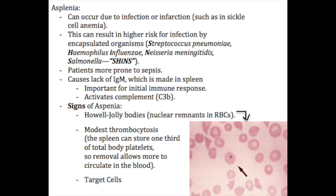IgM is what fixes complement, and complement — in particular complement factor C3B — is really important for fighting encapsulated bacteria. So without IgM being produced in the spleen to activate complement and hence C3B, you have a very hard time fighting encapsulated bacteria.